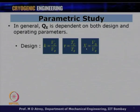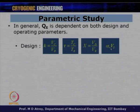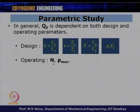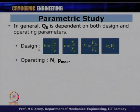The dead volume ratio X is the ratio of total dead volume to the swept volume in the expansion space. The phase angle alpha is between the expander and piston motion, and VT = VC + VE is the total swept volume. Operating parameters — speed N and maximum pressure P_max — can be changed after design by the operator, for example by changing the charging pressure of the gas.